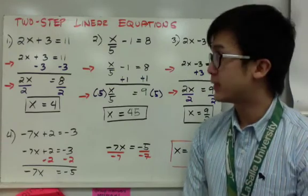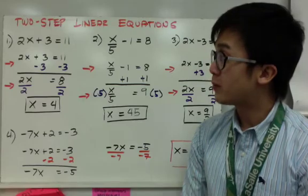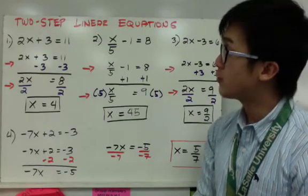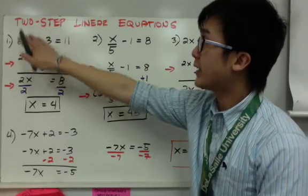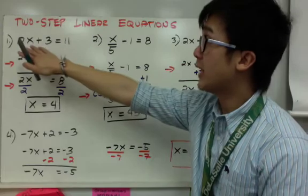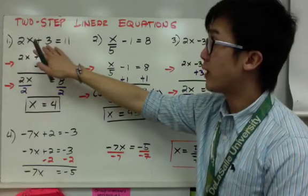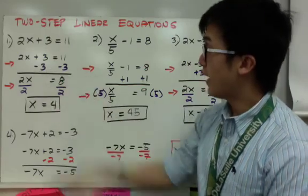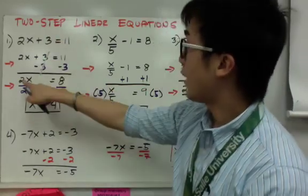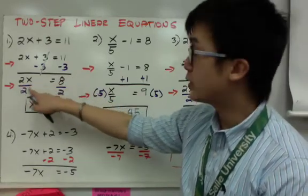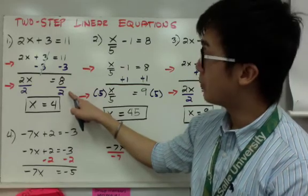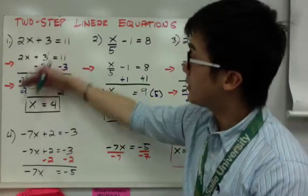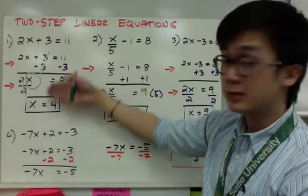Now we combine all the steps from the previous examples to solve two-step linear equations. For example 1, 2x plus 3 equals 11: the first step is to get rid of 3 by subtracting 3 from both sides, leaving 2x equals 8. The second step is to divide both sides by 2. Therefore x equals 4. We need two steps because there are two values to remove to isolate x.